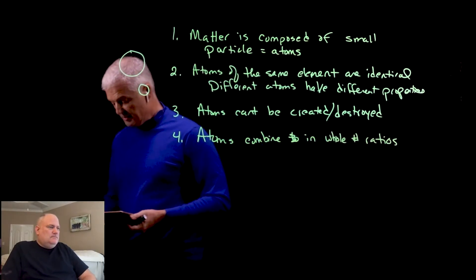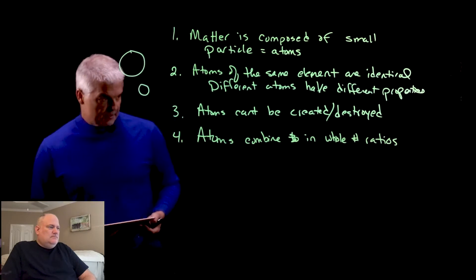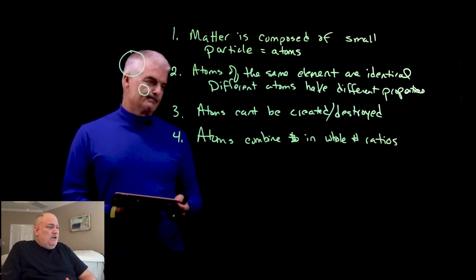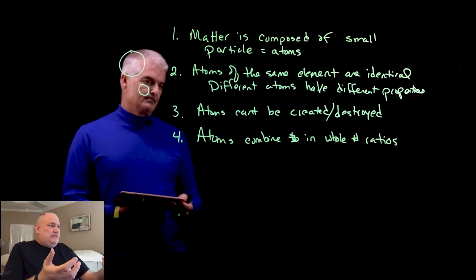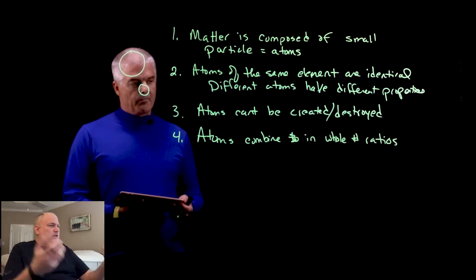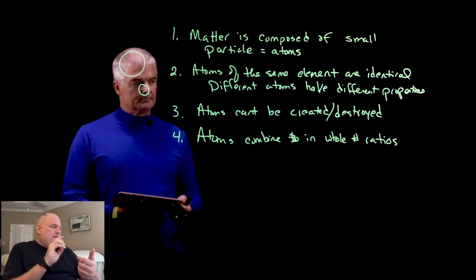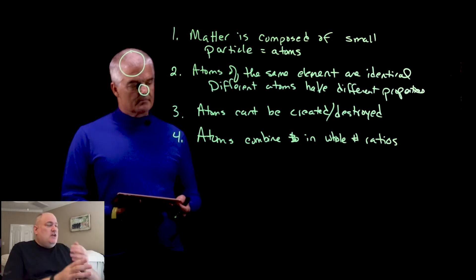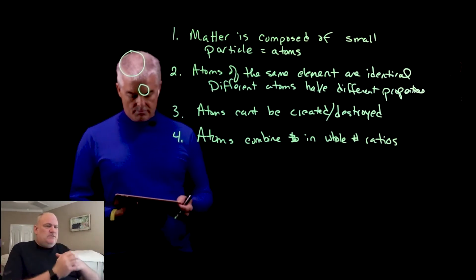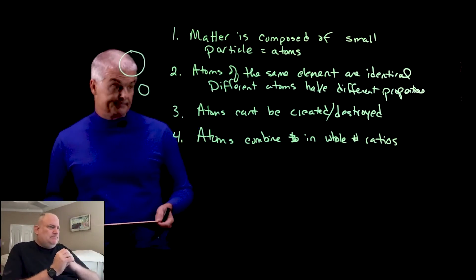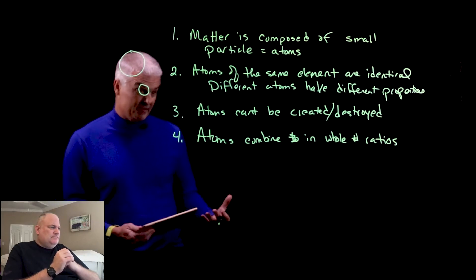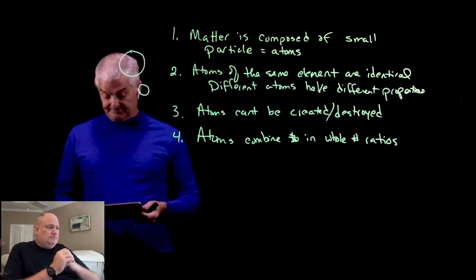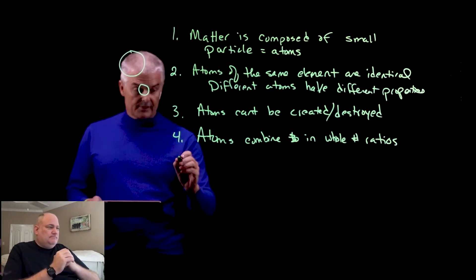Point four: atoms combine in whole number ratios. People didn't even know atoms existed, and now Dalton is saying we can put them together. The key part is the whole number ratios — you can't have part of an atom. We can only have a whole atom combining with another whole atom.